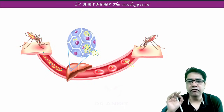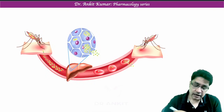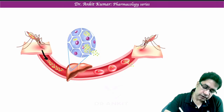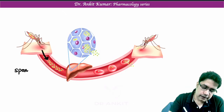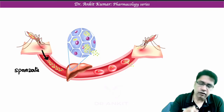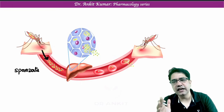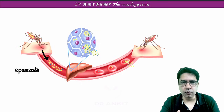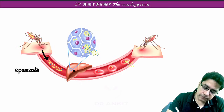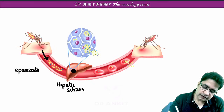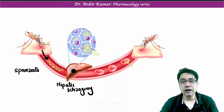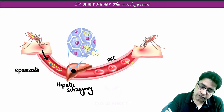Malaria spreads through the bite of the female Anopheline mosquito. When this mosquito bites, the infective stage to humans is the sporozoite. Remember, we don't have any drug to kill sporozoites, although we have vaccines which can make antibodies against sporozoites. The malaria parasite then goes into the liver — this stage is known as hepatic schizogony. From the liver it enters the RBCs, which we call erythrocytic schizogony.